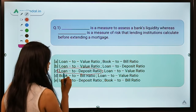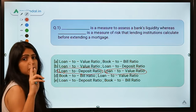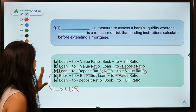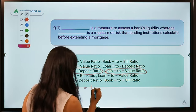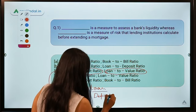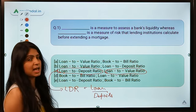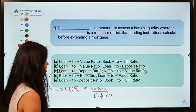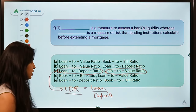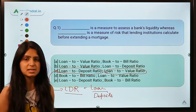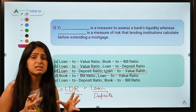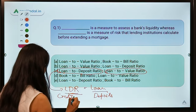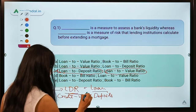Option C refers to Loan to Deposit Ratio (LDR) and Loan to Value Ratio (LTV). LDR is calculated by dividing loans by deposits. A bank collects deposits from clients and extends loans to borrowers. Dividing the number of loans by deposits gives us LDR — telling you what proportion of collected money the bank is extending as loans.